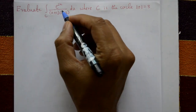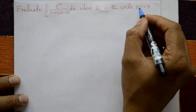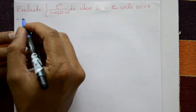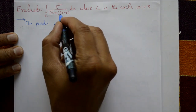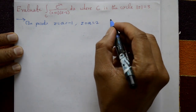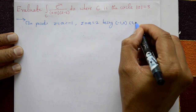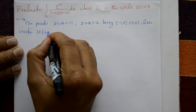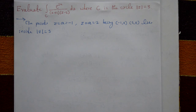Evaluate the integration of e to the power 2z divided by (z+1)(z-2) with respect to z, where C is the circle |z| = 3, with radius 3. The singular points are z = a = -1 and z = a = 2. Both points (-1, 0) and (2, 0) lie inside the circle |z| = 3, since both -1 and +2 are within radius 3.